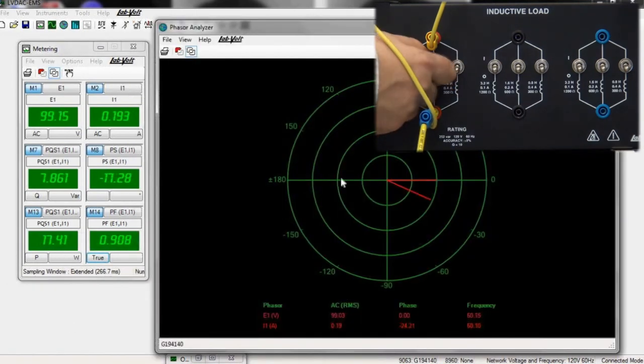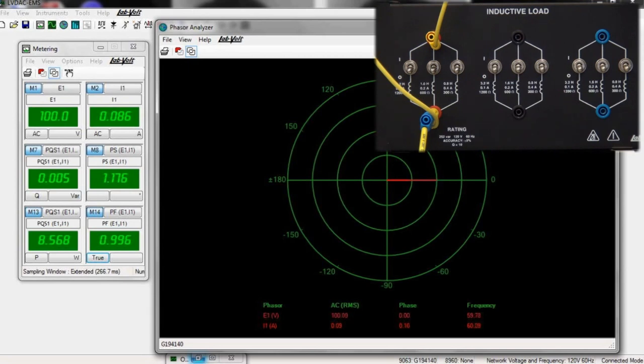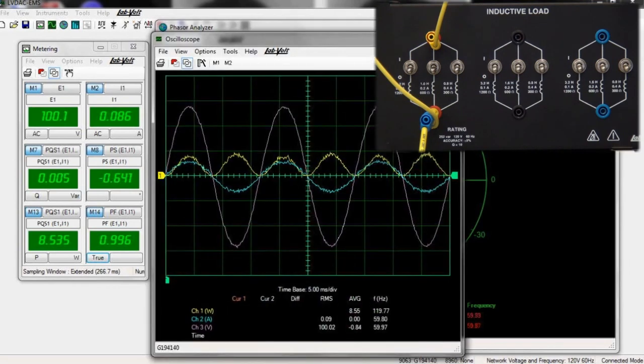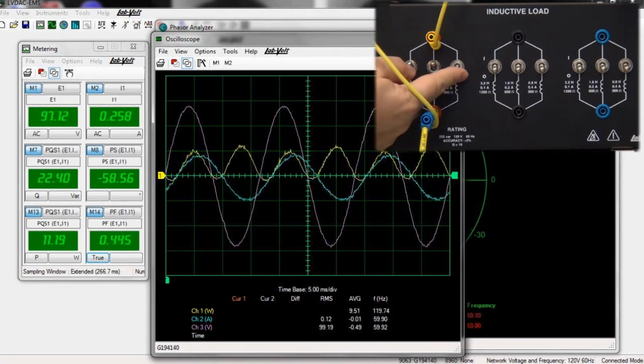It can also use a phasor analyzer which allows you to see what happens when you change the nature of the loads. A powerful oscilloscope that can display up to 8 traces of voltages, currents, or instantaneous power also really helps the students understand these concepts.